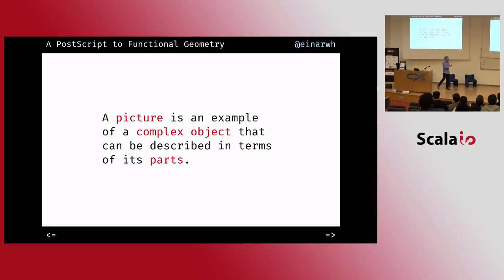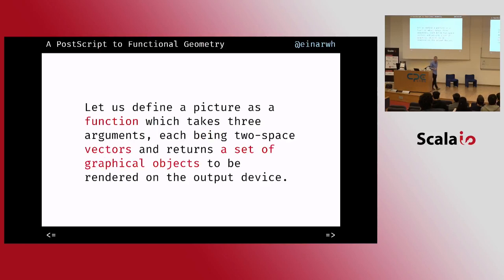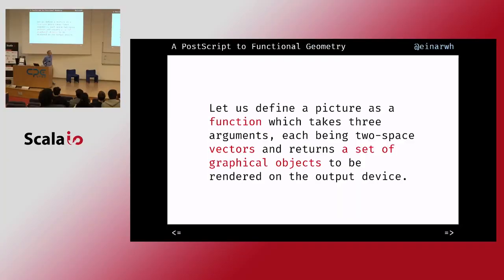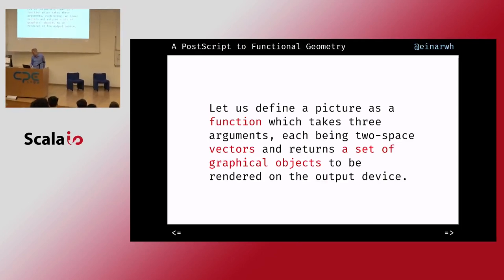The picture is an example of a complex object that can be described in terms of its parts. He argues that we can envision a picture as a function which takes three arguments — vectors — and returns a set of graphical objects that can be rendered on some output device. It could be a printer, it could be a screen.